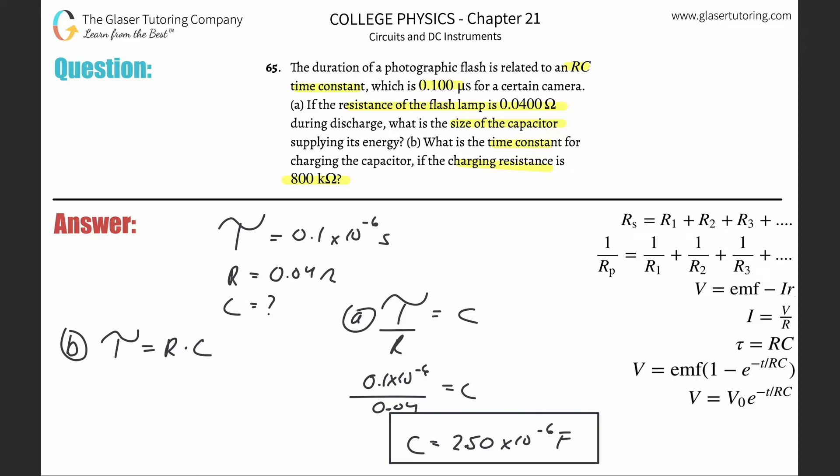And the thing is that the capacitance doesn't change. The capacitance inside of this camera is not changing. That capacitance is going to basically remain constant. So therefore, this is going to be 800—careful, it's kilo—so you're going to multiply it by 10 to the 3, multiplied by now our capacitance here.